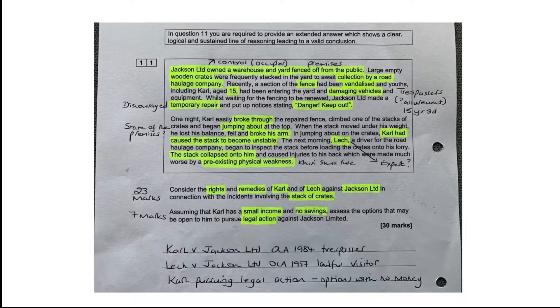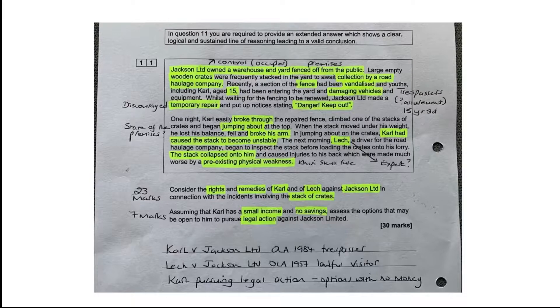Here are my annotations of this scenario. I highlight the things I think are particularly important, picking out things from the Act as soon as I look at the scenario. The way you know you're going to be doing Occupier's Liability — if it doesn't say — is that it will involve something to do with the premises: something's gone wrong with someone's house or garden, rather than a straightforward negligent act like a driving incident.